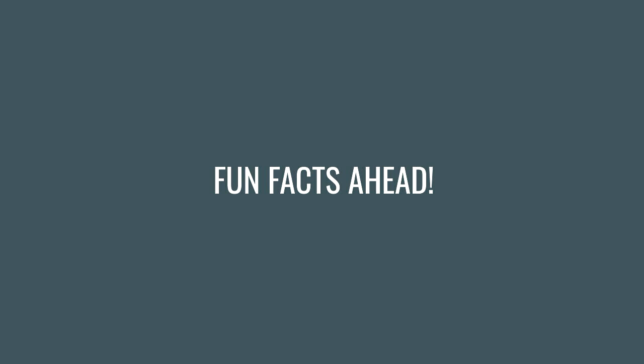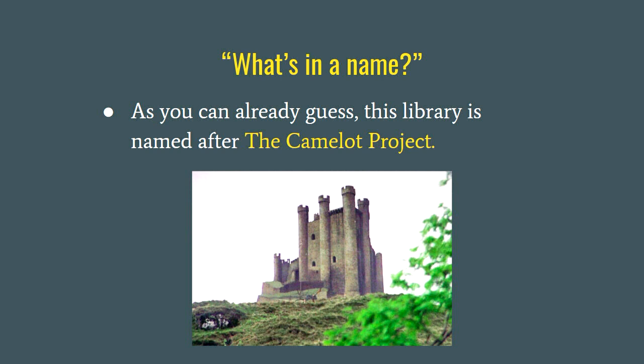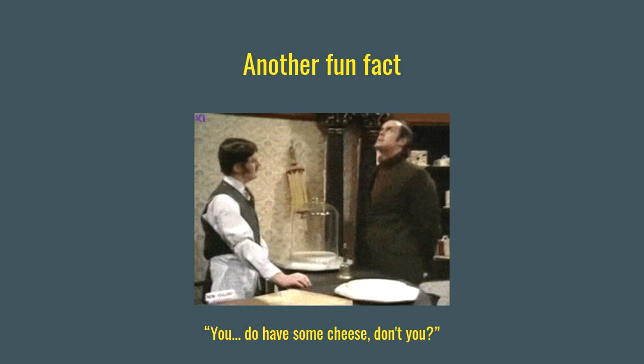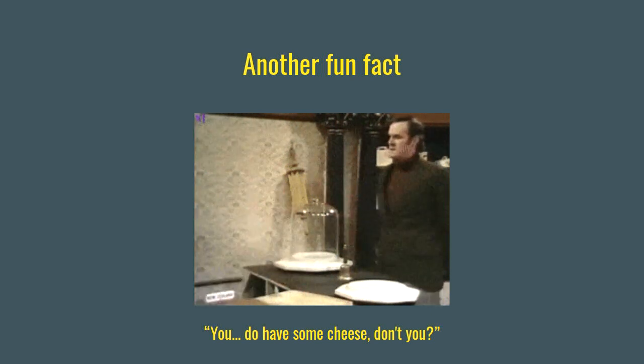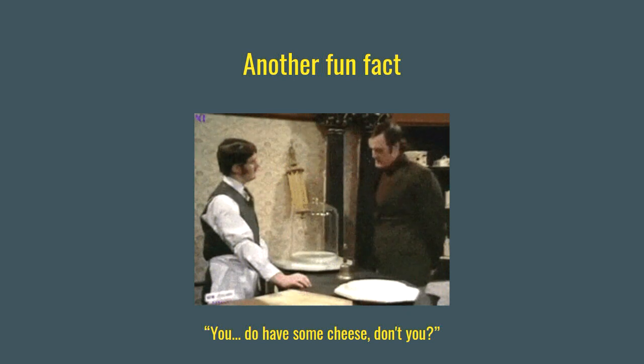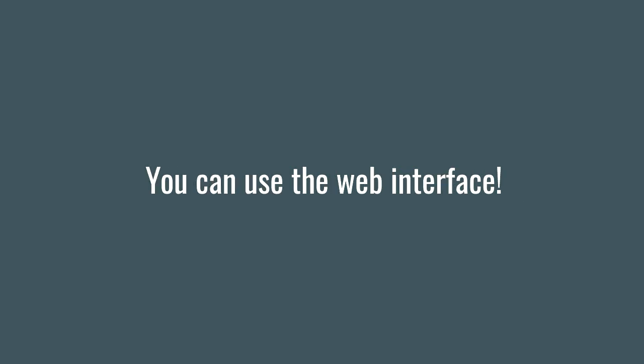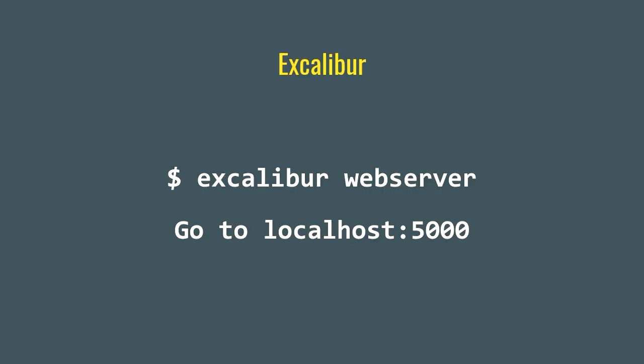You would be wondering why it's called Camelot. It was named after the Camelot project, which is also the name of a castle in Monty Python and the Holy Grail, which is based on the Arthurian legend. Another fun fact: the Python Package Index was called the Cheese Shop, based on the Monty Python Cheese Shop sketch. You should definitely check out Monty Python's Flying Circus. But what if you don't want to write code? Camelot comes with a web interface — Excalibur — that you can use directly. After installing Excalibur, you can just run excalibur webserver and go to localhost:5000 to use the web interface.